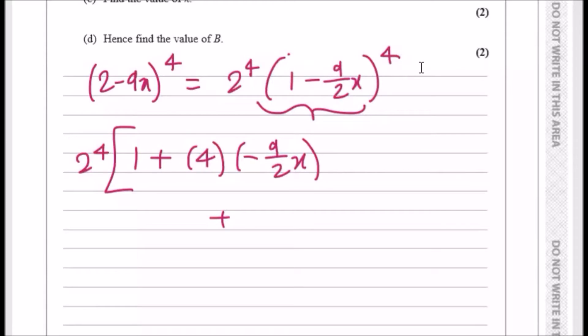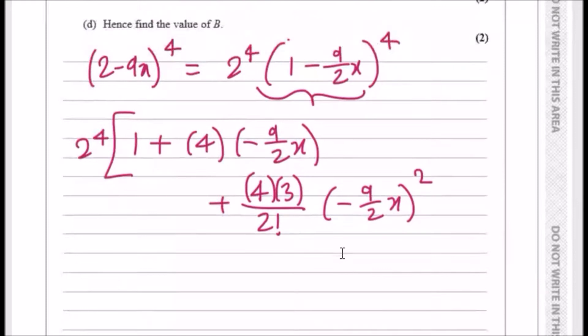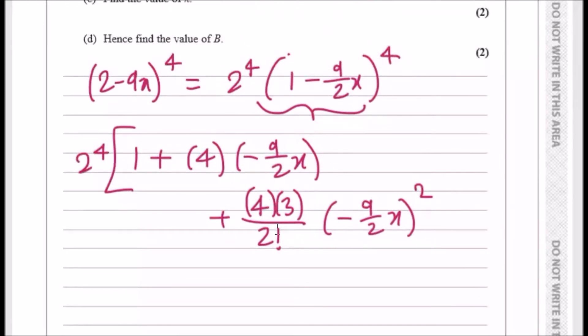And now the next one is going to be all in descending order of powers. So we're going to do the power times one less than the power, so it'll be 4 times 3 over 2 factorial because it's two terms, and then we copy the term and we square it. Now (minus 9 over 2x) to power 2, and that's it.